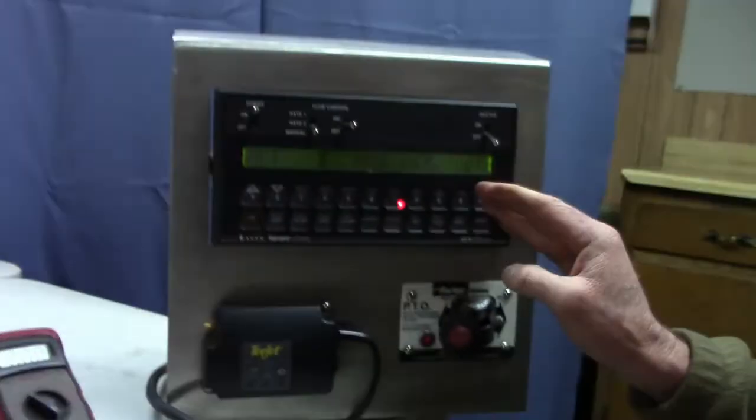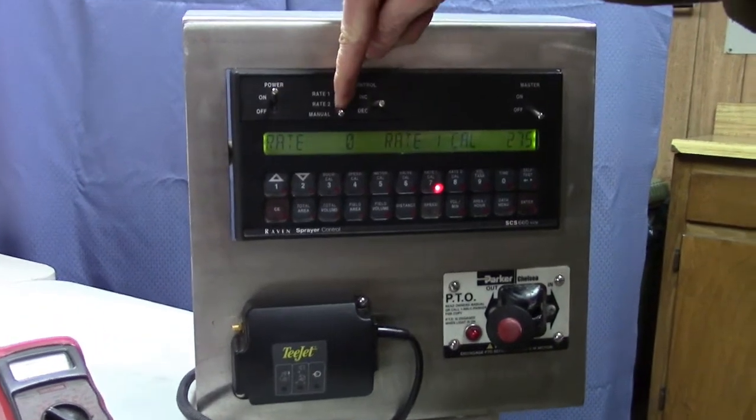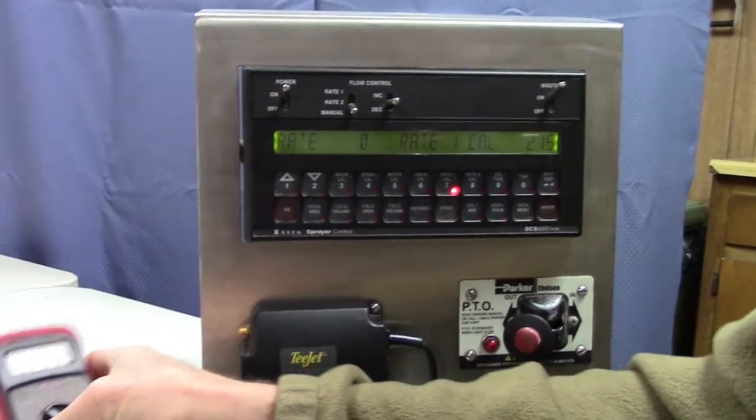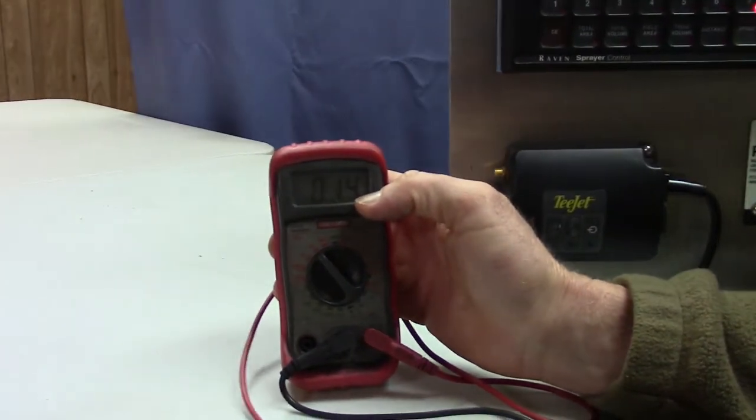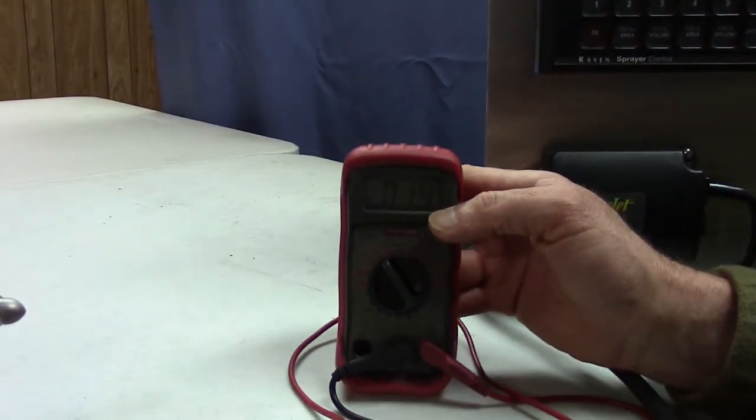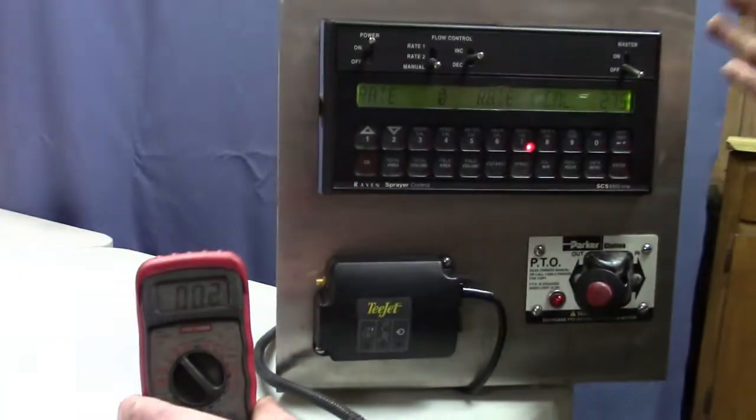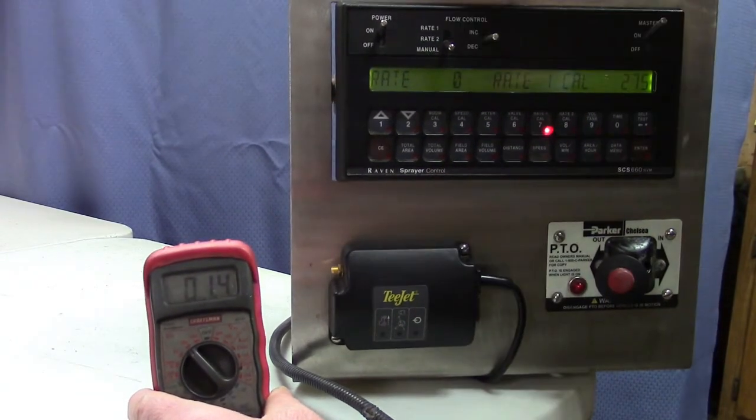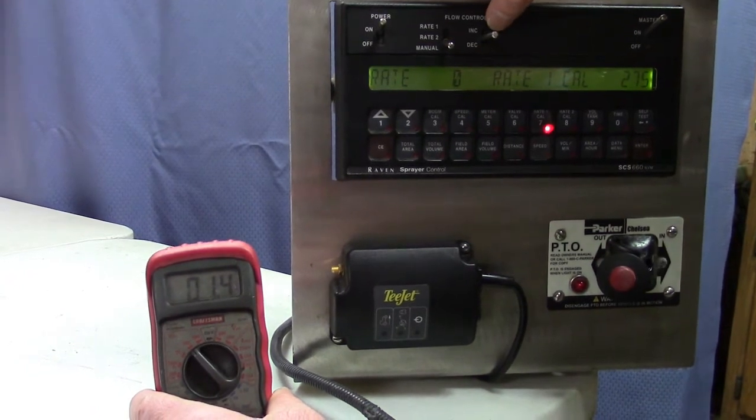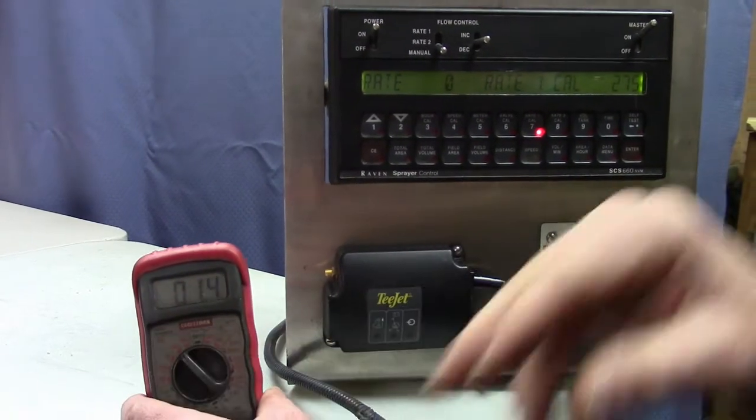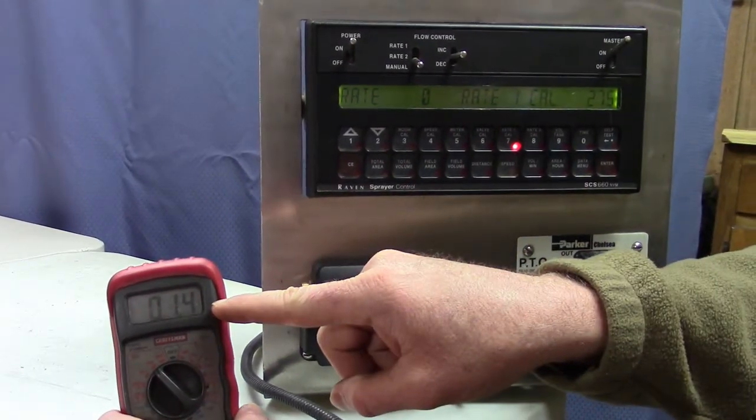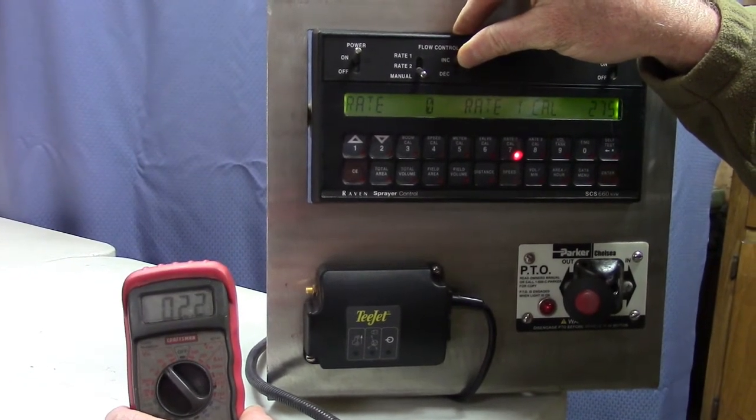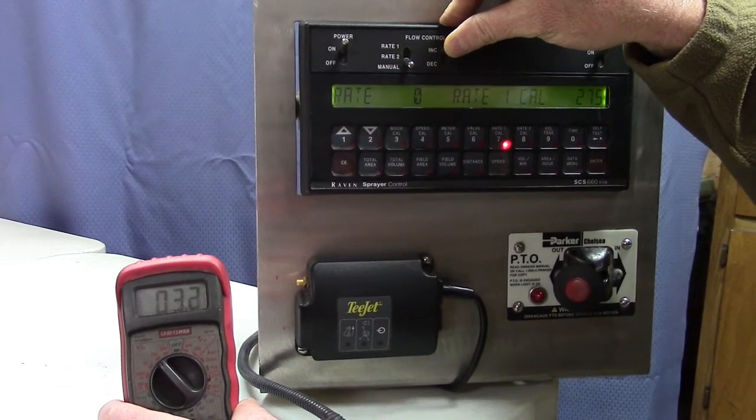So then you go to your rate controller and you put it in the manual position. Then you turn on your master switch and you'll see voltage show up on your voltmeter. I'm going to turn my master switch off again and I'll have no voltage there, it goes to zero. So flip the master switch on, you have voltage, and then you can use your increase and decrease to simulate sending voltage to this valve. When I hold my increase up, I'll have more voltage on my voltmeter. So I hold my increase up and the voltage starts climbing, and it will go all the way up to approximately 12.